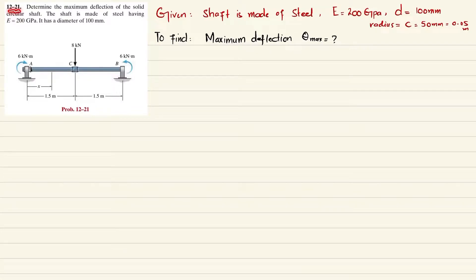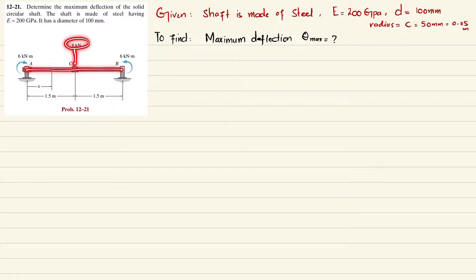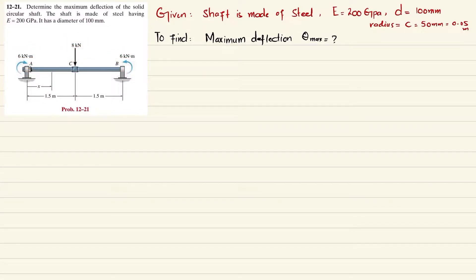Welcome back, problem 12-21. Determine the maximum deflection of a solid circular shaft. The shaft is made of steel with E = 200 GPa and diameter = 100 mm. There is a point load of 8 kN at the center C, and moments of 6 kNm at A and 6 kNm at B. We need to find the maximum deflection due to this loading, which will occur at the midpoint.